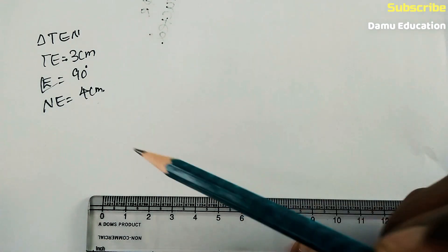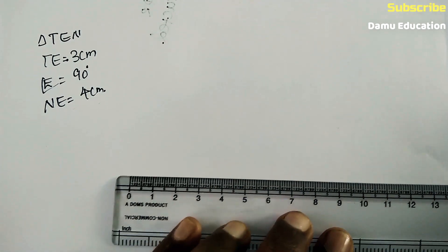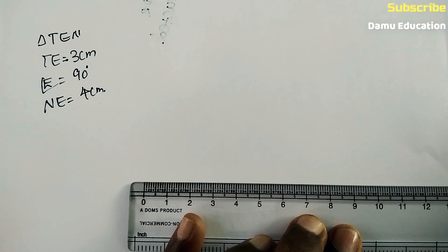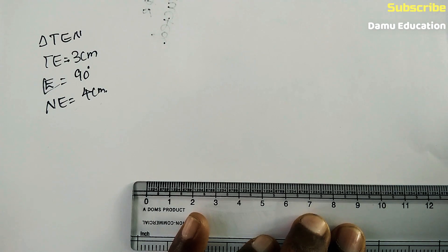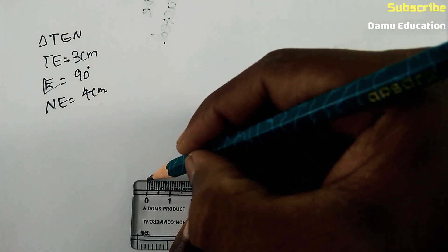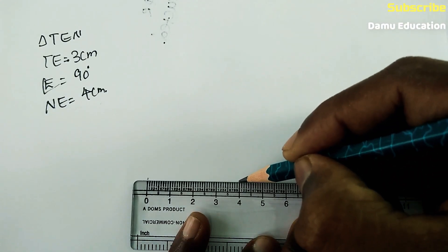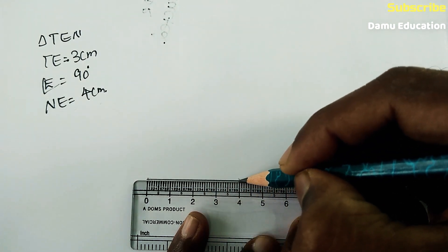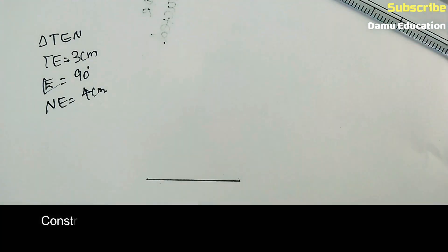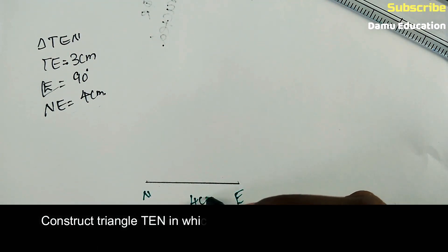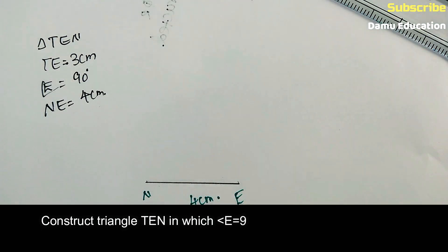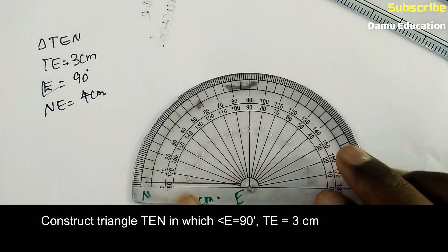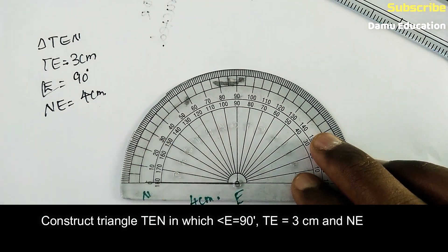Draw line segment NE of 4 centimeters. Make sure that NE is 4 centimeters. Then measure the angle with center E.